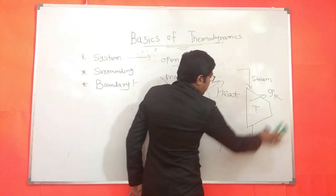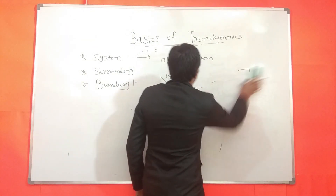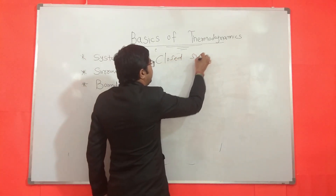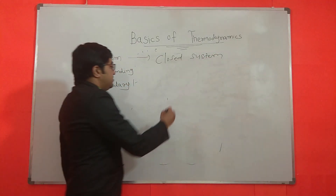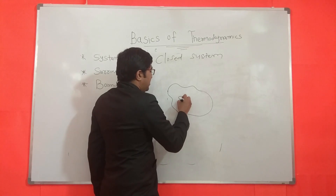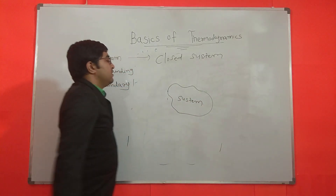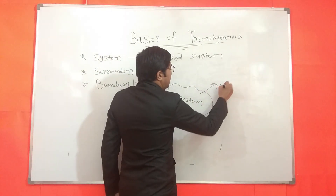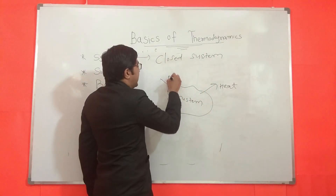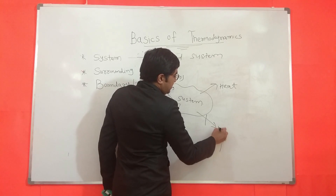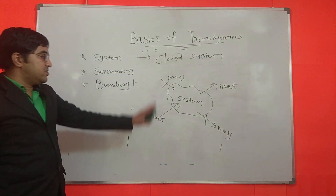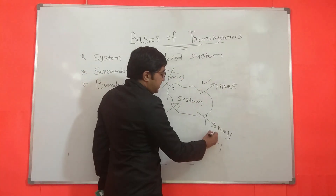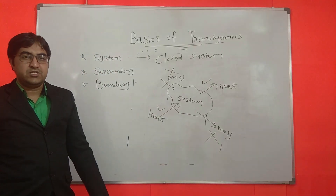Another type of system is the closed system. In a closed system, heat is transferred but there is no transfer of mass — mass does not cross the boundary. In whichever system only heat transfer takes place but there is no transfer of mass, it is called a closed system.